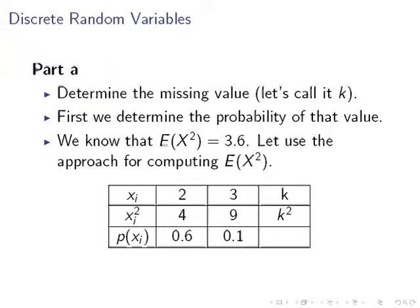But if we look at 0.6 and 0.1, that gives us 0.7. So necessarily, the probability of k has to be 0.3. So the probability of this missing value is 0.3. That's a start.